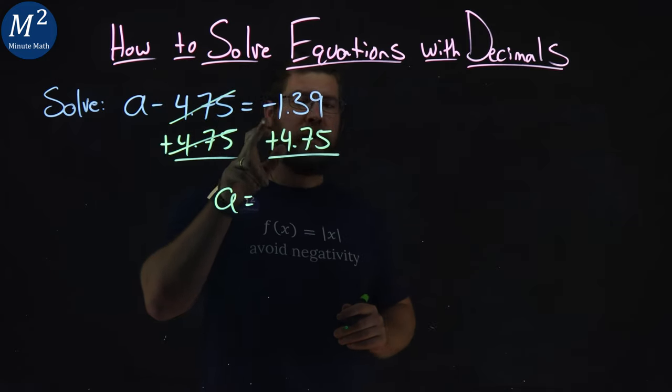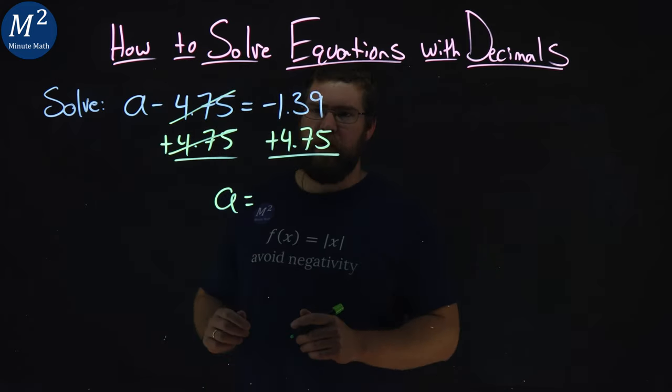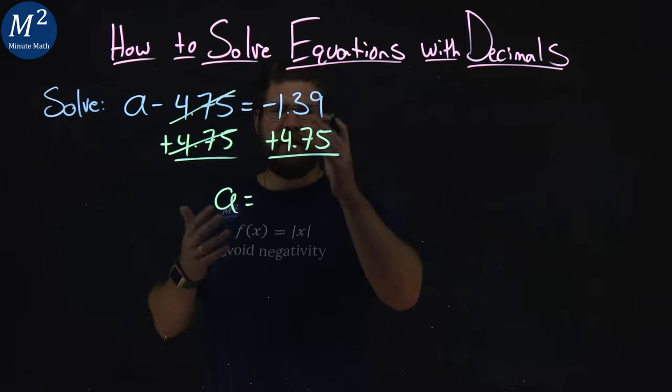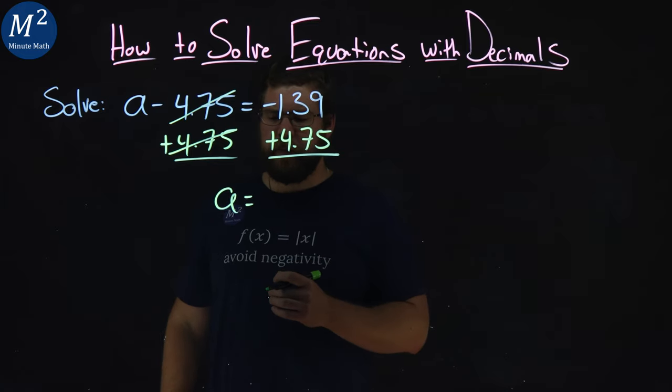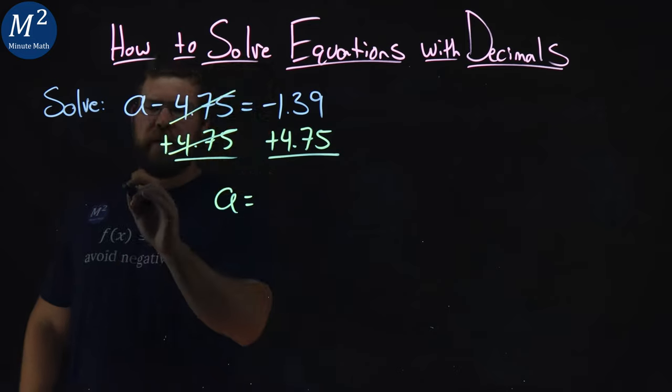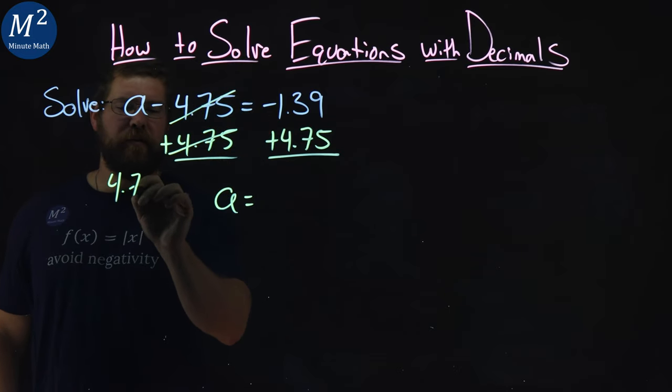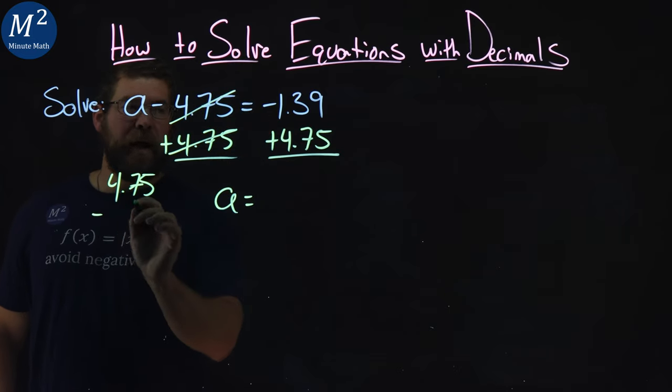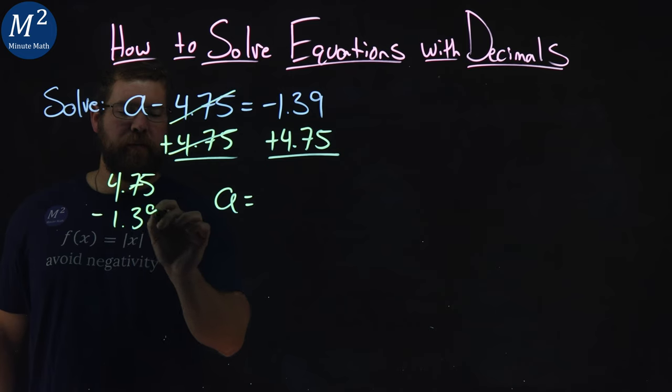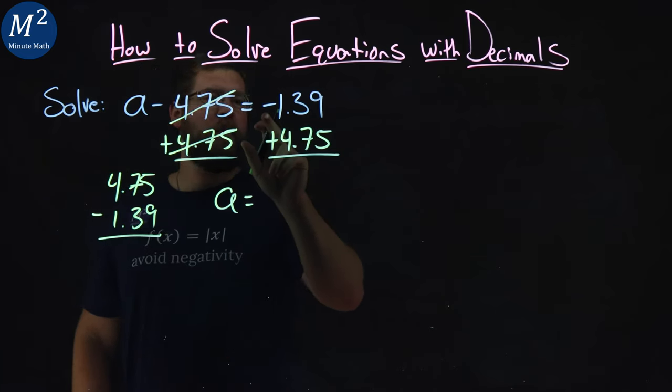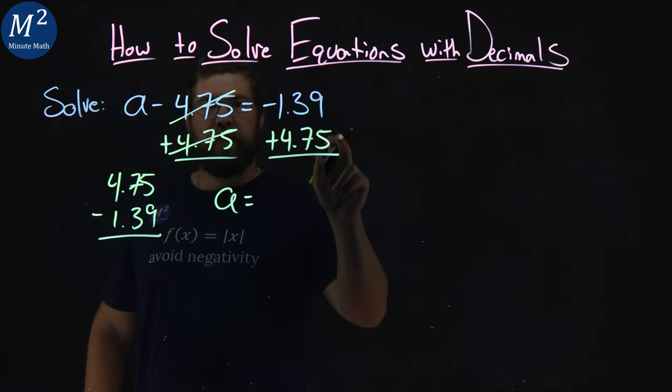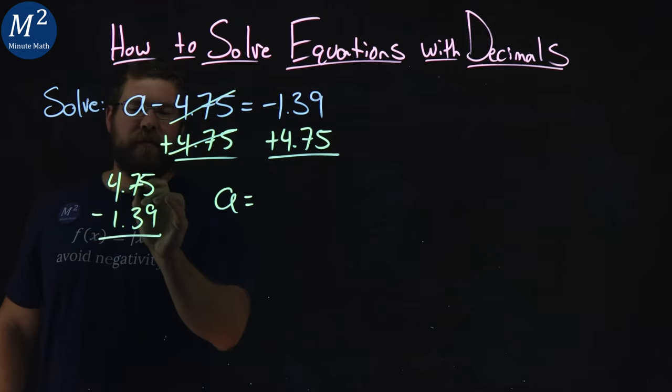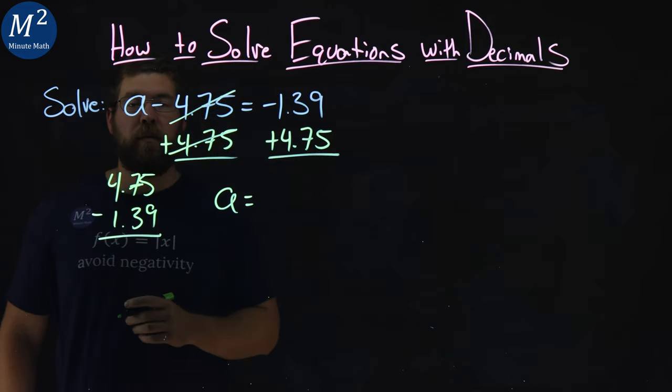The negative 1.39 plus 4.75, that kind of is hard to do vertically. But, isn't that the same thing as if I said 4.75 minus 1.39? Remember, negative 1.39 plus a positive 4.75 is the same thing as 4.75. I can write that minus 1.39.